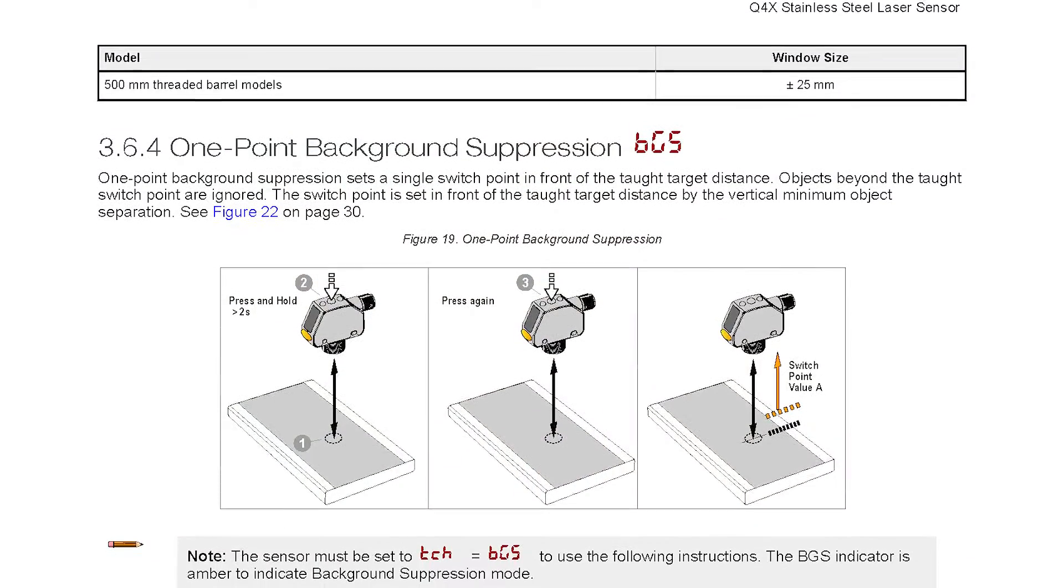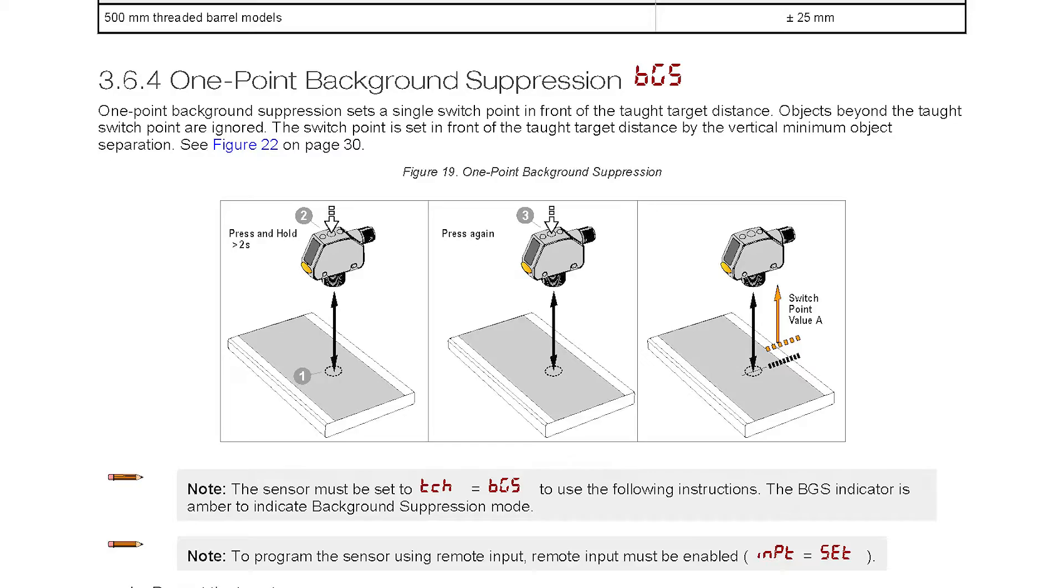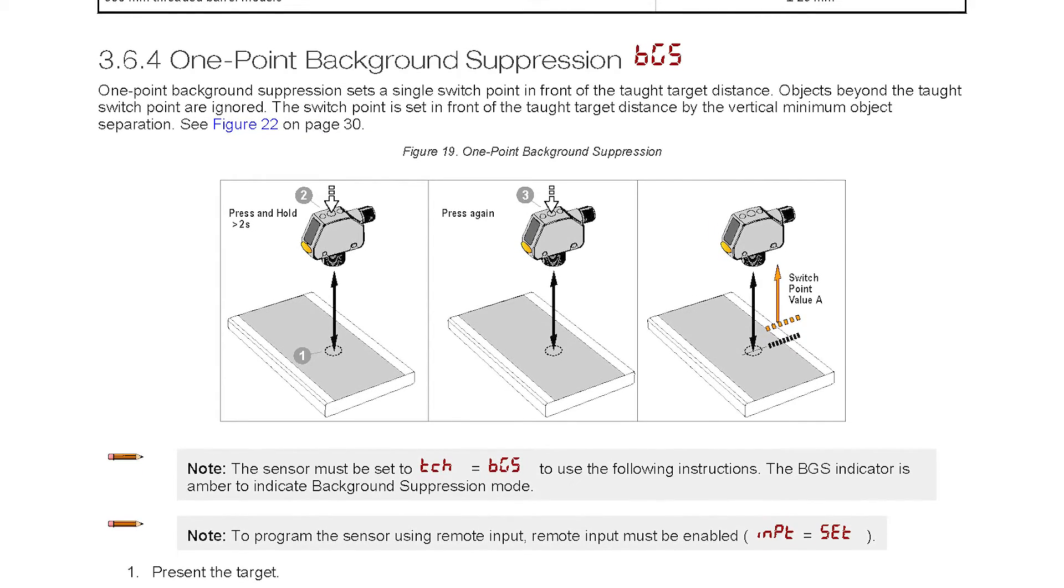Background suppression sets the switch point in front of the taught distance and ignores anything detected beyond that point.